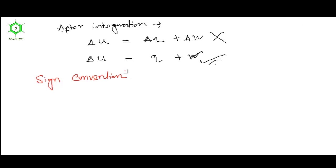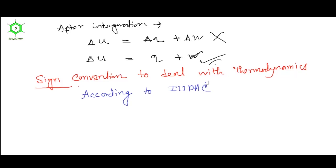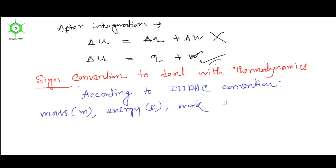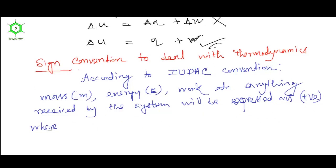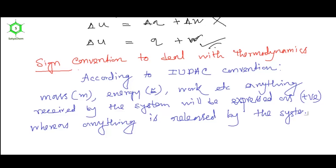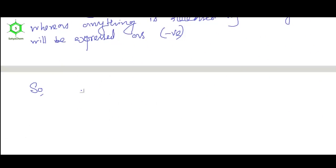Now, sign convention to deal with thermodynamics. I will discuss the IPSC rule. According to IPSC convention, mass, energy, work, etc. — anything received by the system will be expressed as positive, whereas anything released by the system will be expressed as negative. This is the IPSC convention. Anything taken up by the system is positive; anything released by the system is negative. Work done on the system is positive, and work done by the system is negative.